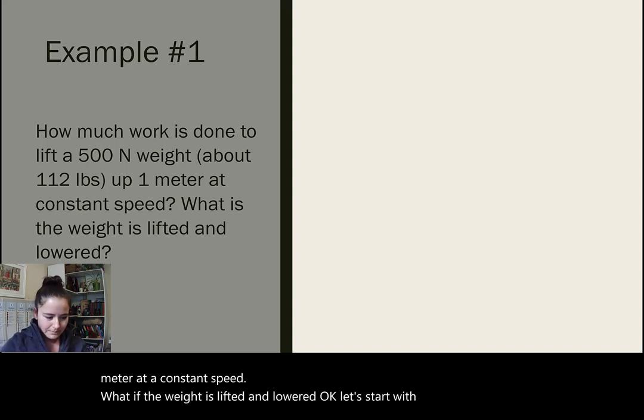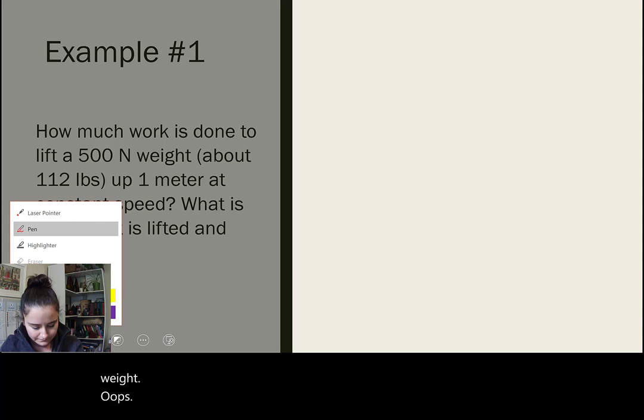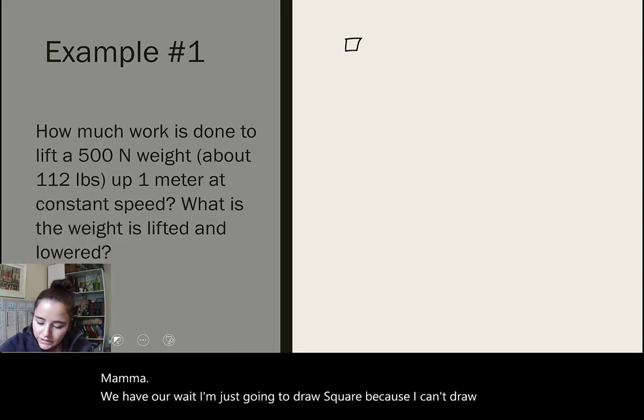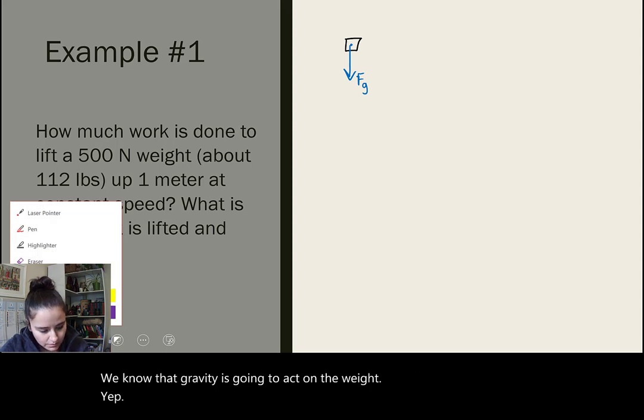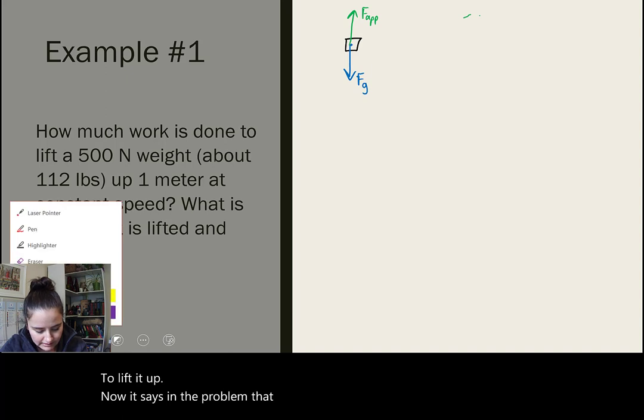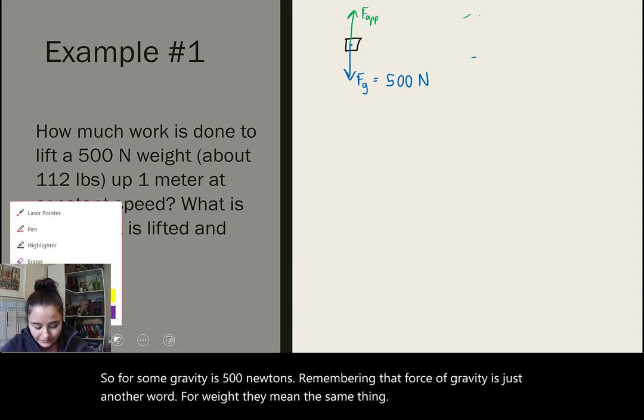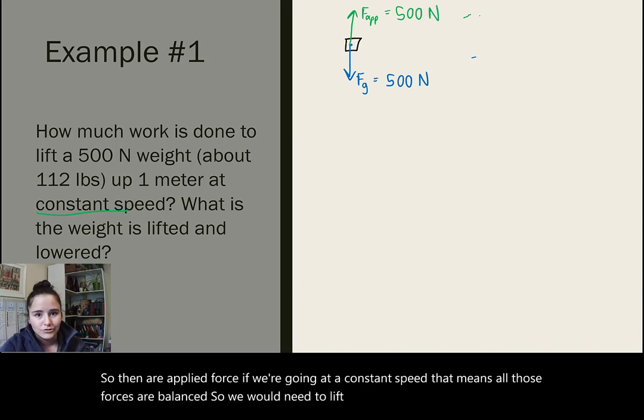Well, let's start with the first part of that problem and just kind of think about what's going on here. So, we have our weight. We know that gravity is going to act on the weight. And we know that you will need an applied force to lift it up. Now, it says in the problem that the weight of it is 500 newtons. So, force of gravity is 500 newtons. Remembering that force of gravity is just another word for weight. So, then, our applied force, if we're going at a constant speed, that means all those forces are balanced. So, we would need to lift up with 500 newtons.